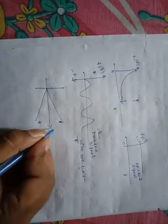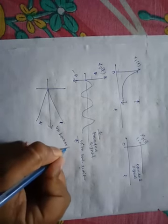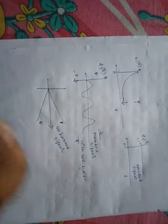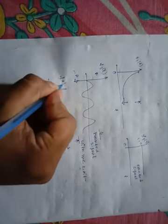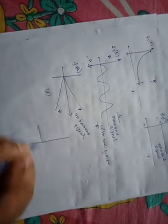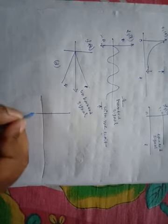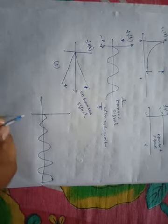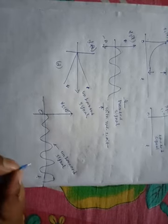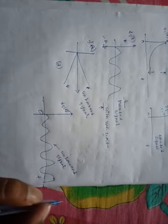An unbounded signal is a signal that grows without limit over time. When the signal output goes to infinity with respect to time, it is called an unbounded signal.